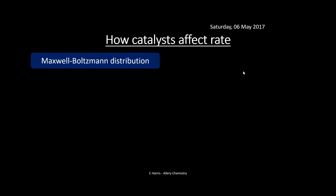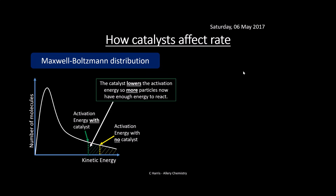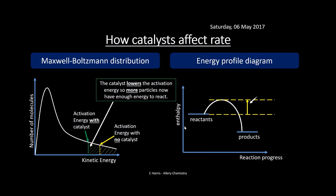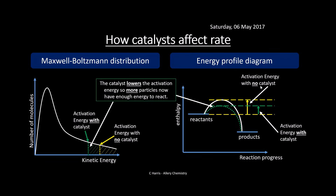Let's come back to the Maxwell-Boltzmann distribution to see how a catalyst affects rate. A catalyst lowers the activation energy by providing an alternative pathway for the reaction. On the Maxwell-Boltzmann curve, the activation energy line shifts to the left, which increases the area of particles with sufficient energy to react. On the energy profile diagram, the activation energy is noticeably lower with a catalyst than without one — less energy is needed for the reaction to happen.